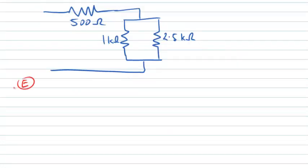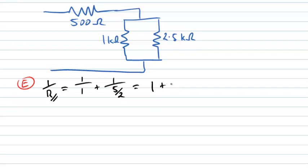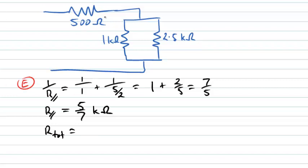Moving to the evaluation step: for the parallel combination of 1 kΩ and 2.5 kΩ, 1/R_parallel = 1/1 + 1/(5/2) = 1 + 2/5 = 7/5, so R_parallel = 5/7 kΩ. The total resistance is then the 0.5 kΩ in series with 5/7 kΩ. As a decimal, this comes out to 1.21 kilo ohms.